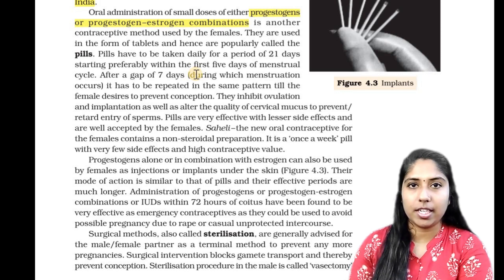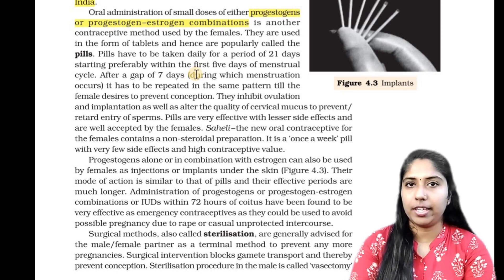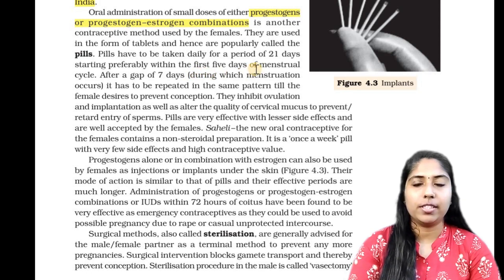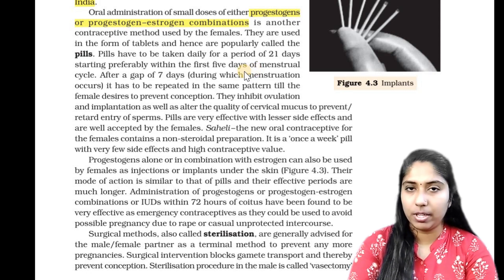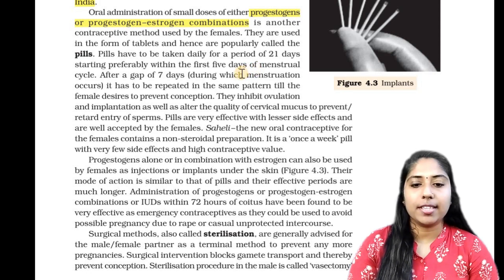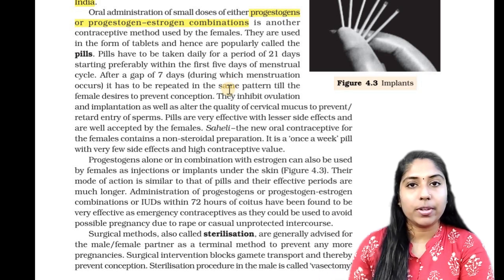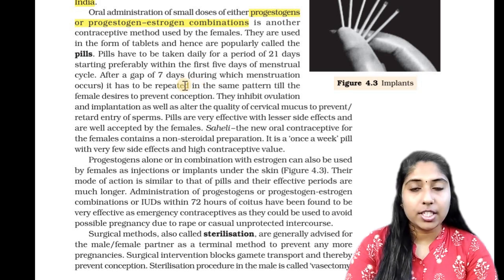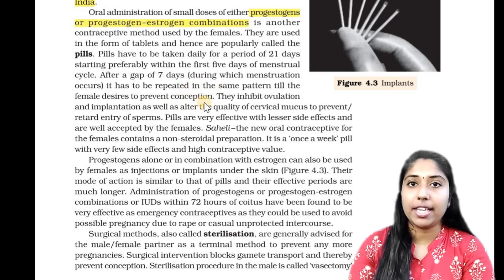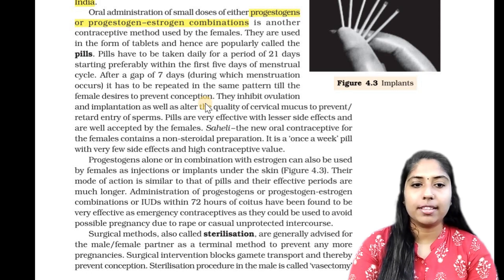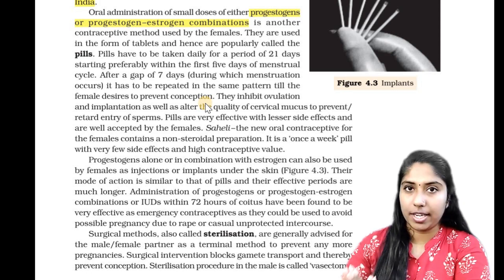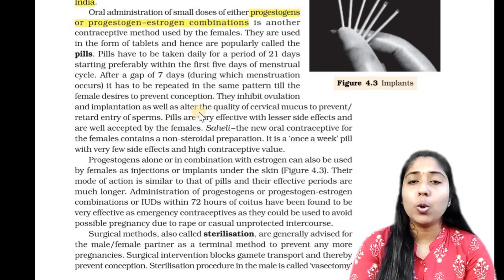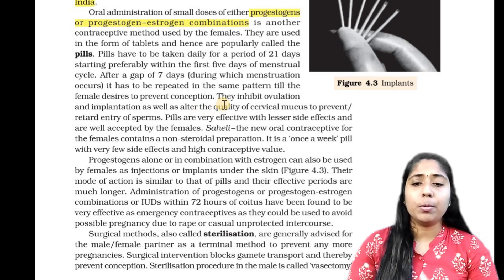If you are preventing pregnancy, it will be the main lecture. These pills are a main method. We start within the first 5 days of the first menstrual cycle, then we start the pill. We continue to take the pill throughout the menstrual cycle. These are important for each pill cycle.